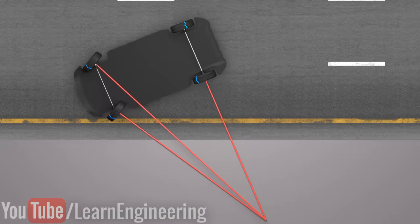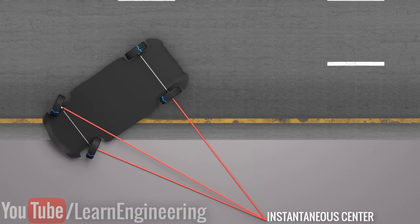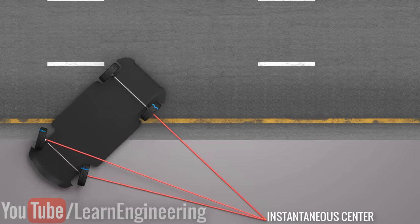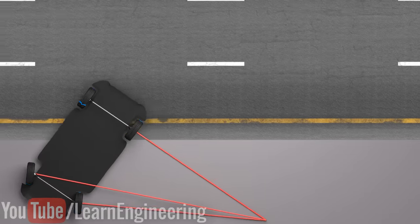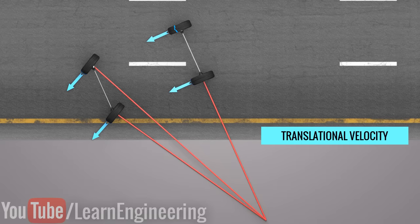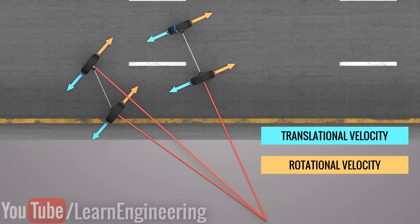When the car makes a turn, at the instantaneous center shown, all four wheels can satisfy the condition of rolling. From this snapshot, you can clearly see how the velocity at the contact point of all four wheels becomes zero.